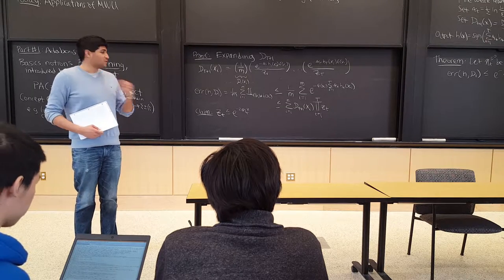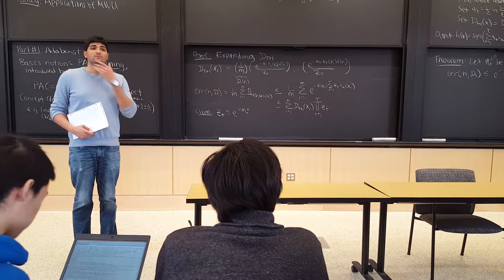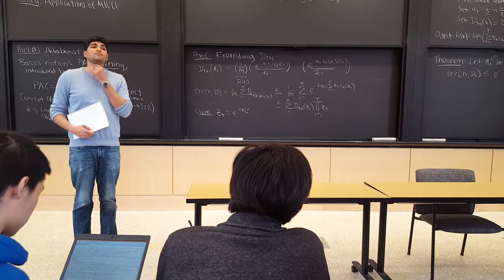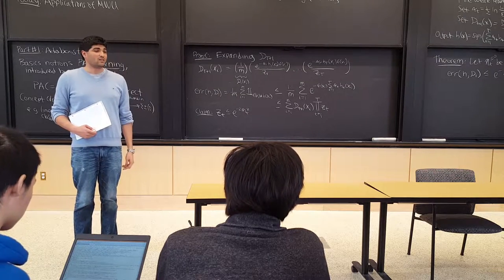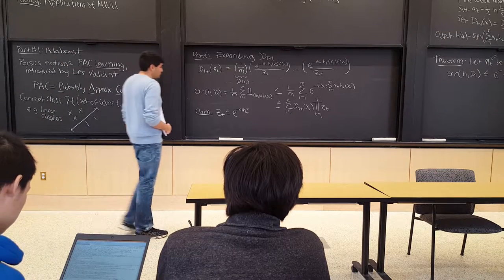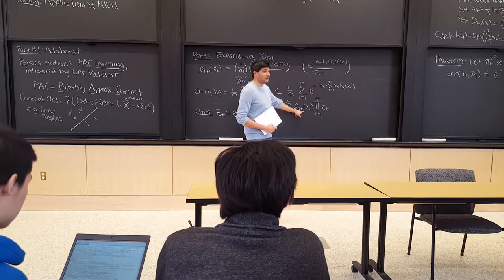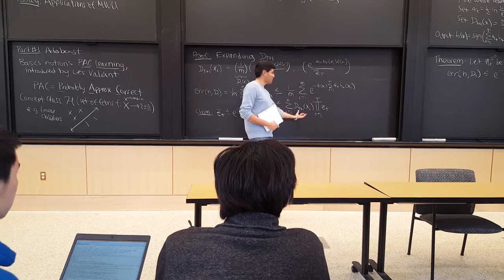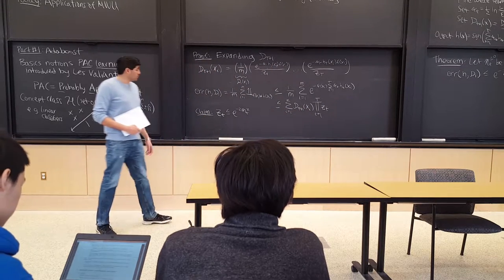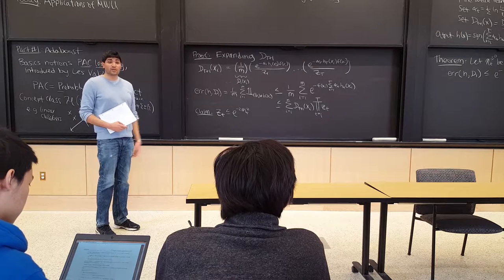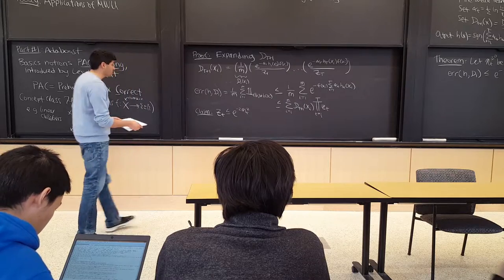This exponential expression equals the sum over x_i of D_{T+1}(x_i) times the product of the Z_t's. The entire proof reduces to one claim: that each Z_t is at most e^{-2 * a_t^2}. If we have this claim, then since D_{T+1} is a distribution summing to 1, the error is bounded by the product of the Z_t's, giving e^{-2 * sum a_t^2}.